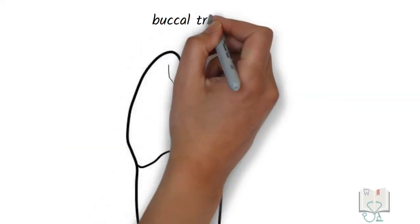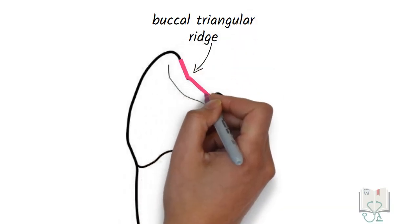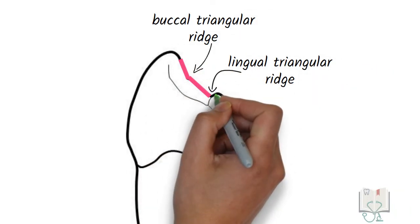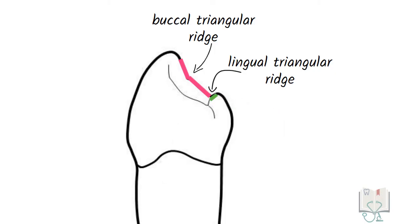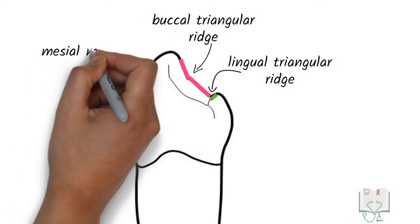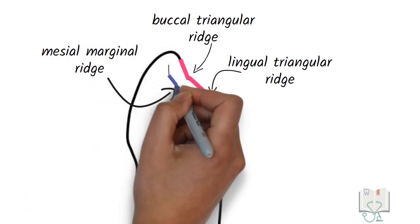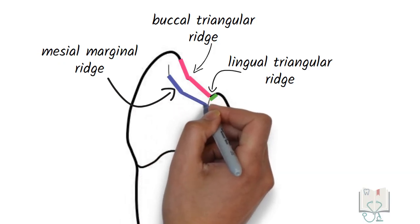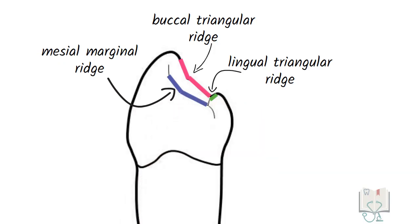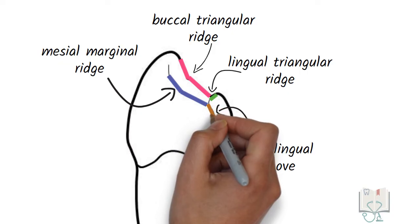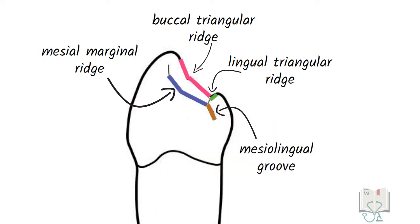The buccal triangular ridge runs from the buccal cusp tip to the center, and the lingual triangular ridge runs from the lingual cusp tip to the center; they meet at a point just above the mesiolingual groove. The mesial marginal ridge is not horizontal but slanting, almost parallel to the buccal triangular ridge, ending at the mesiolingual developmental groove which runs vertically downwards.